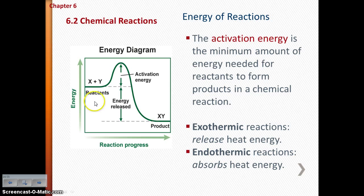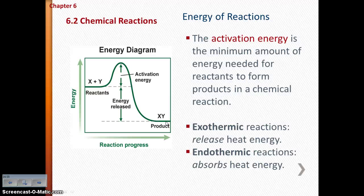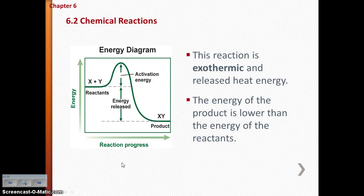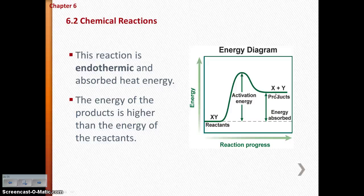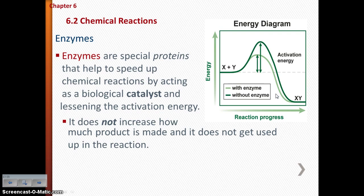In an energy diagram, the reactants start at a high energy level and the products end at a lower energy level — that's an exothermic reaction, where energy is released overall. That's number 19 on your notes: draw and explain that. For an endothermic reaction, the products have a higher energy level than the reactants, meaning energy was absorbed. An endothermic reaction in a test tube would actually feel cold. That's number 20 — make sure you draw that.